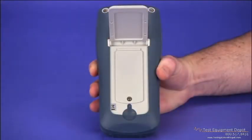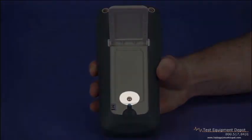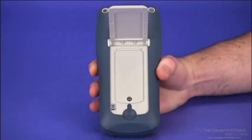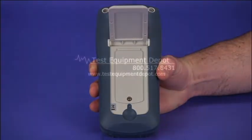Underneath the tilt stand is the battery compartment, accessible via a single screw. The separate battery compartment means you don't have to break a calibration seal to change the batteries.